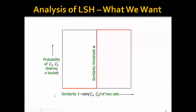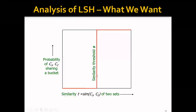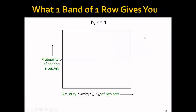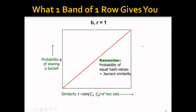If we look at this figure, the horizontal axis is T — the similarity of C1 and C2 — and the vertical axis is the probability of C1 and C2 sharing a bucket. Ideally, we want a step function: if similarity is below the threshold, the probability of sharing a bucket should be zero; if T is larger than S, the probability should be 1. One band of one row gives a straight line, since the probability of equal hash values equals the Jaccard similarity. Using B bands of R rows produces an S-shaped curve.